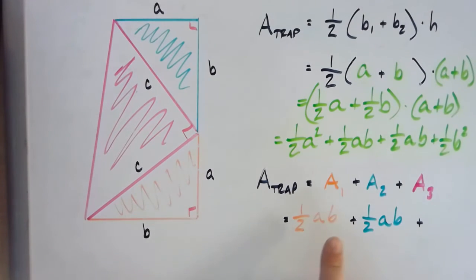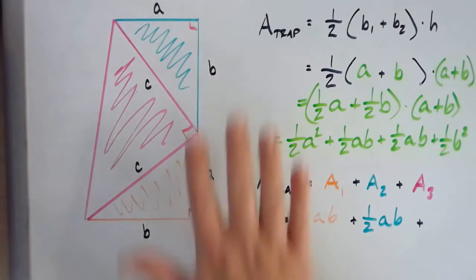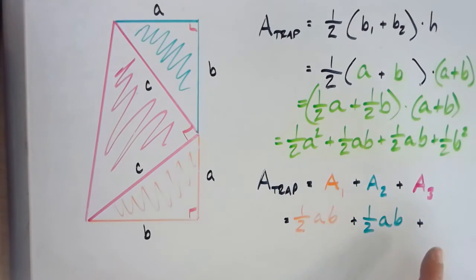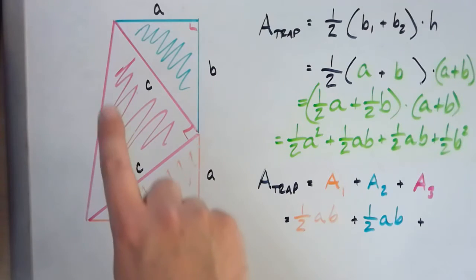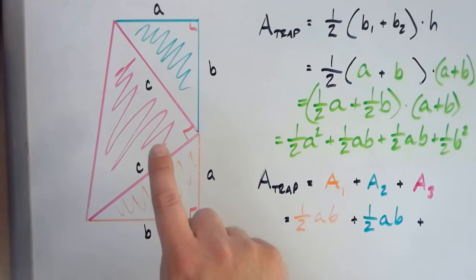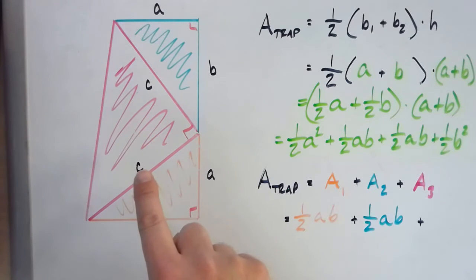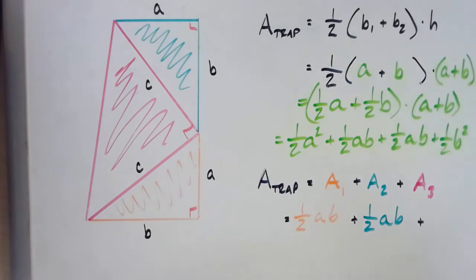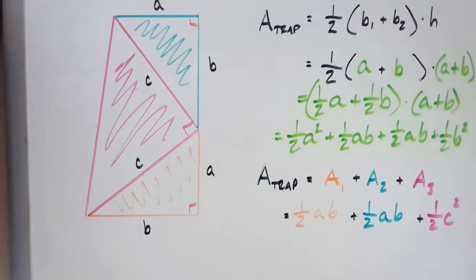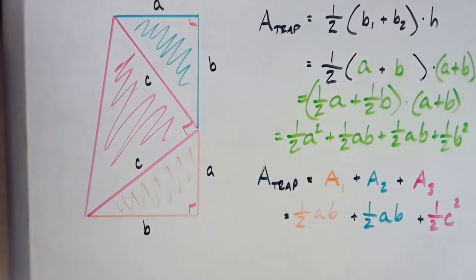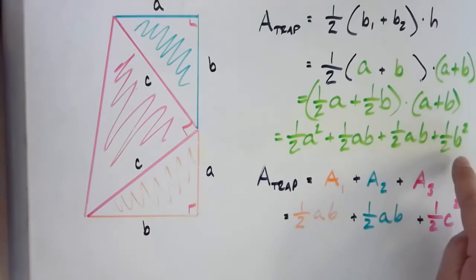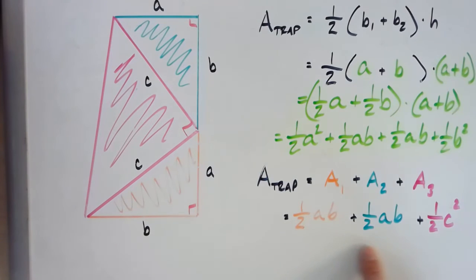The third triangle — the pink one — is also a right triangle, but its base and height are both C. So C times C gives C squared, and the area of the pink triangle is one-half C squared. Adding all three triangle areas together gives the total area of the trapezoid from Method 2.